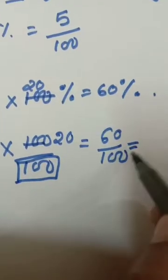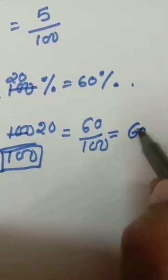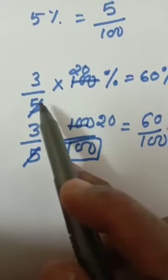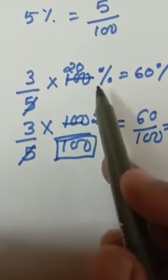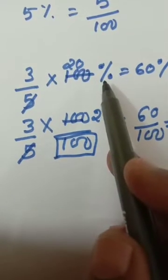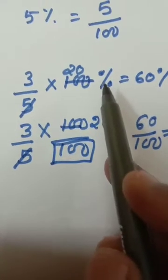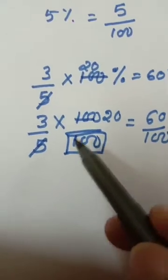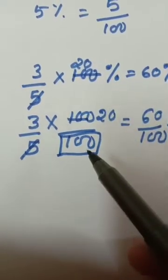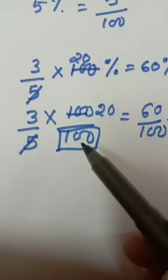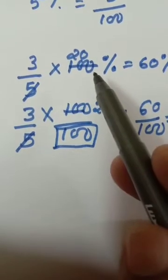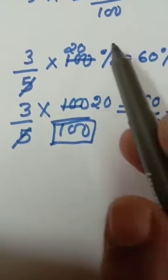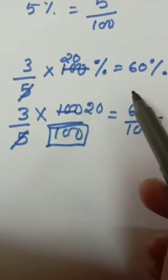Now I told you if denominator is 100, you can say numerator percentage. So whenever you want to convert a number to percentage, you have to multiply by 100. Because 100 percentage means divided by 100. Both methods are correct. Most of the children use the first method but they are not putting the percentage sign. If you are not putting the percentage sign, that is totally wrong.